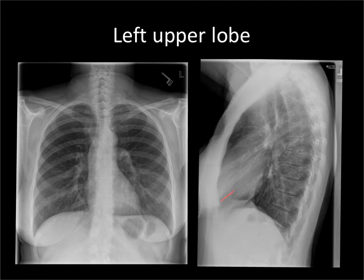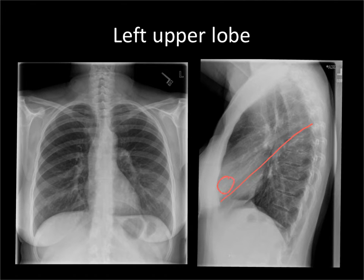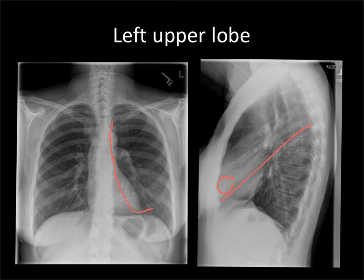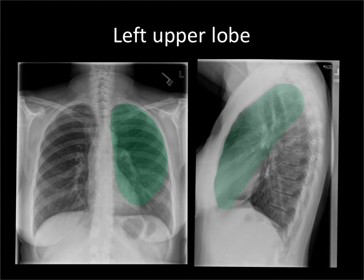To do the left upper lobe, let's draw in that oblique fissure coming up to the level of the aortic arch, as we said earlier. The upper lobe is going to be anterior to that oblique fissure. Note that the left upper lobe comes all the way down to the apex of the lung. It doesn't come all the way to the midline because the right ventricle — the most anterior part of the heart — is up against the sternum. But the left upper lobe we can now draw in as being something like this.